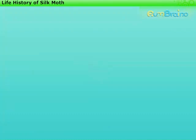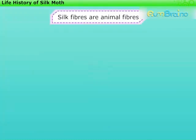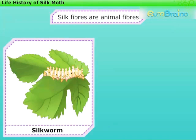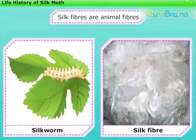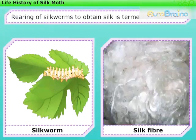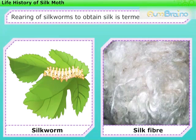Life history of silk moth. We know that silk fibers are animal fibers. Silkworms are reared for obtaining silk. Rearing of silkworms to obtain silk is termed as sericulture. In India, sericulture is a very old occupation where plenty of silk is produced on a commercial scale.